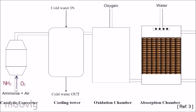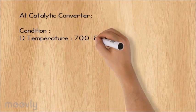The ammonia is oxidized to nitric oxide in the presence of platinum gauze at 700 to 800 degrees Celsius.